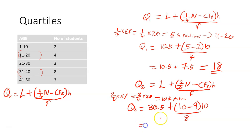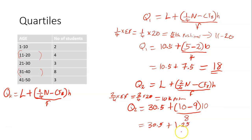So that gives us 30.5 plus — 10 minus 9 is 1. And 1 times 10 gives 10. And 10 divided by 8, you get 1.25. So 30.5 plus 1.25 equals 31.75. This is the second quartile.